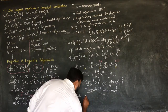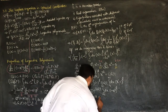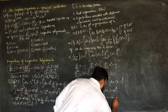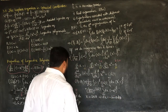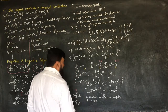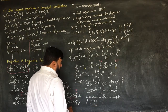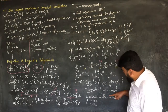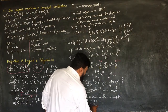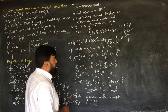Now we solve the integral with the substitution x = cosθ, so dx = -sinθ dθ. When x = -1, cosθ = π, and when x = +1, cosθ = 0. So the limits change from [-1, +1] to [π, 0] under this substitution, and we can now write the integral in terms of θ.